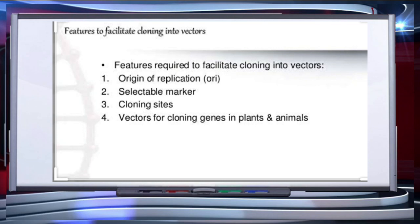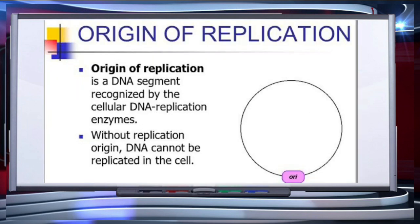Now let's understand the features required to facilitate cloning into a vector: origin of replication (ORI), selectable marker, cloning sites, and vectors for cloning genes in plants and animals. We will discuss each feature one by one.